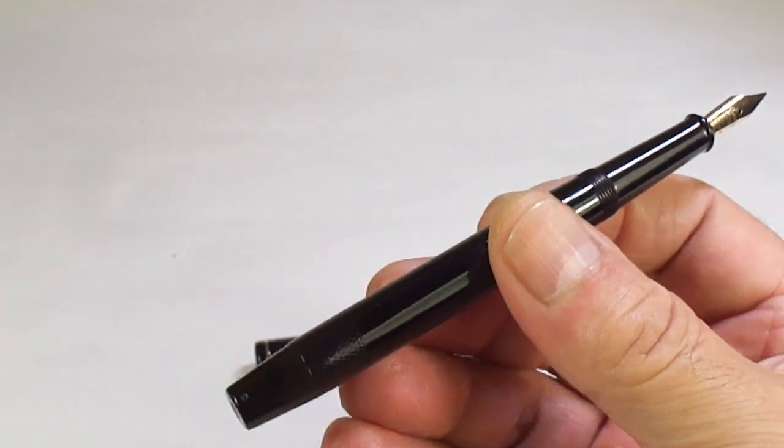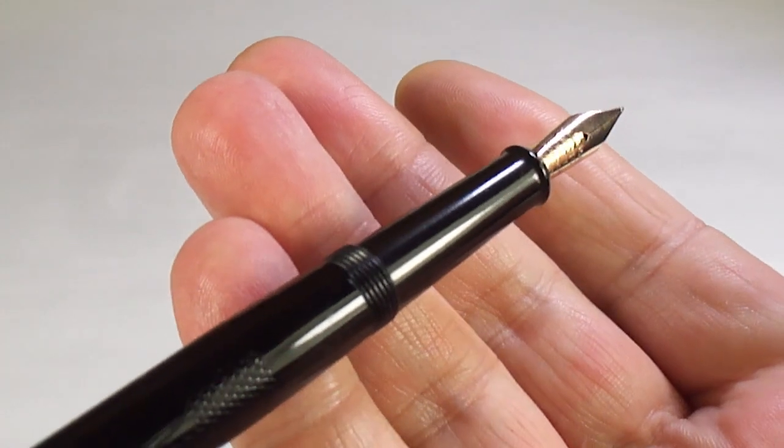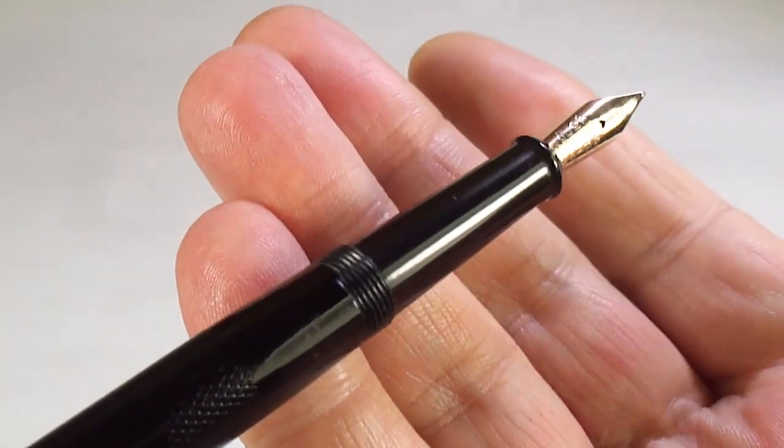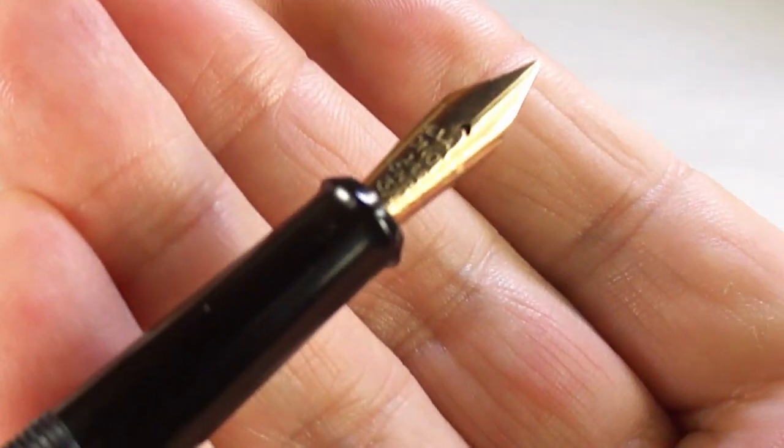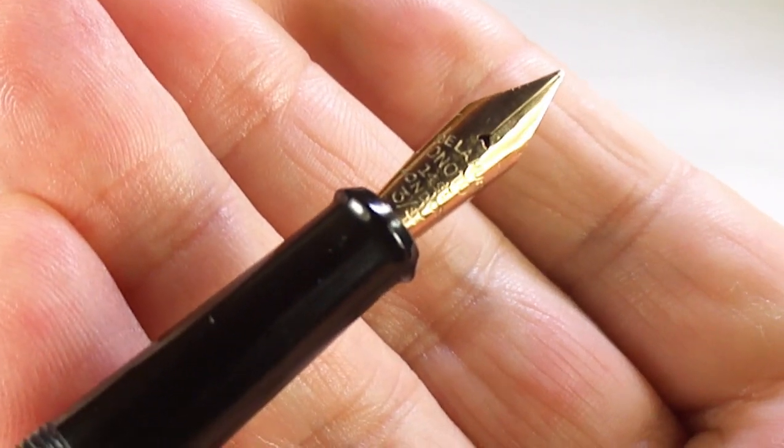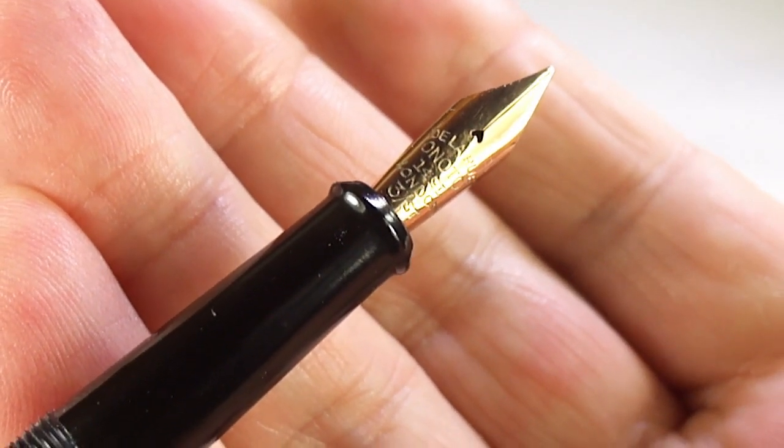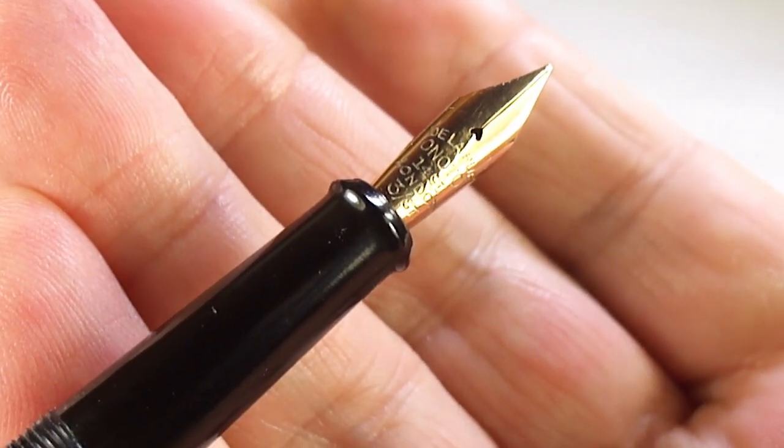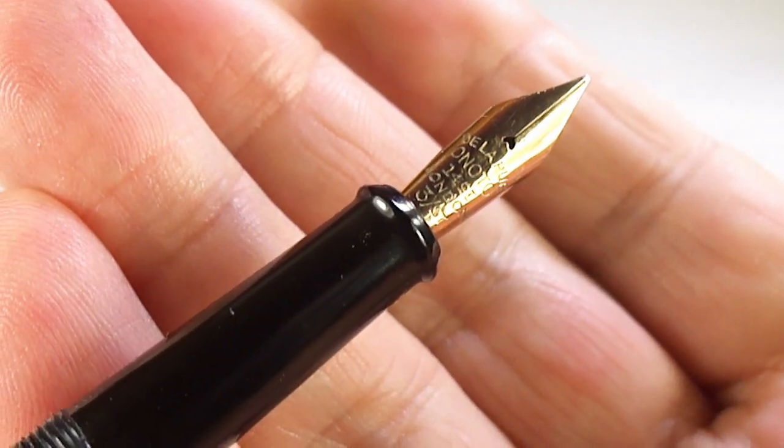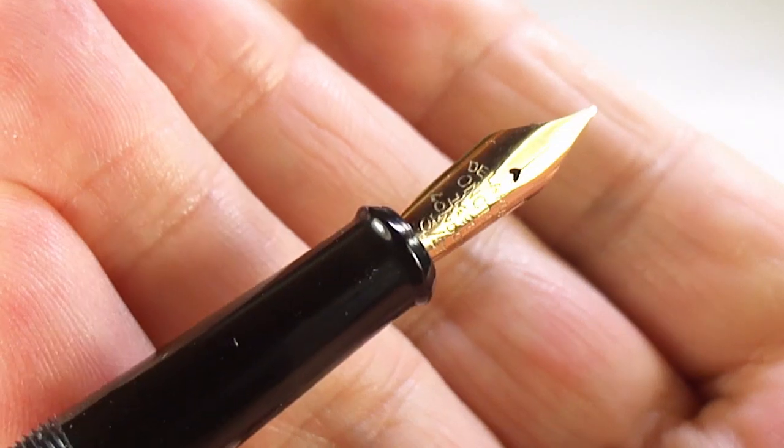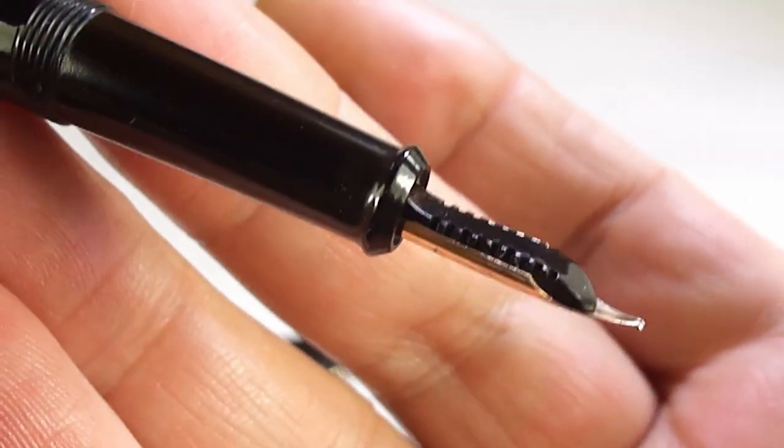If I take you up to the section, you can see the section is a long section with this little ridge towards the nib. If we take you up to the nib there, it reads De La Rue, Onoto, 14 carat, London, three dash ST. So it's got the correct number three nib.